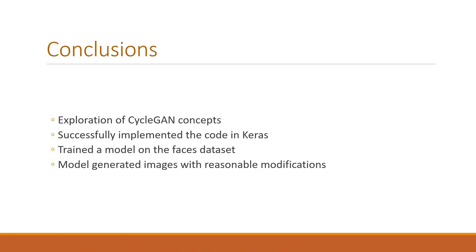To conclude, we have looked at the various concepts in CycleGAN and analyzed why it is better than existing approaches. We successfully implemented the code in Keras and tested it on the Monet-to-photo dataset, and trained a model using the CelebA faces dataset with various architectural experiments. We found better results using the ResNet-9 architecture in the transformation layer, and the generated images are sometimes acceptable — overall this project is a success.